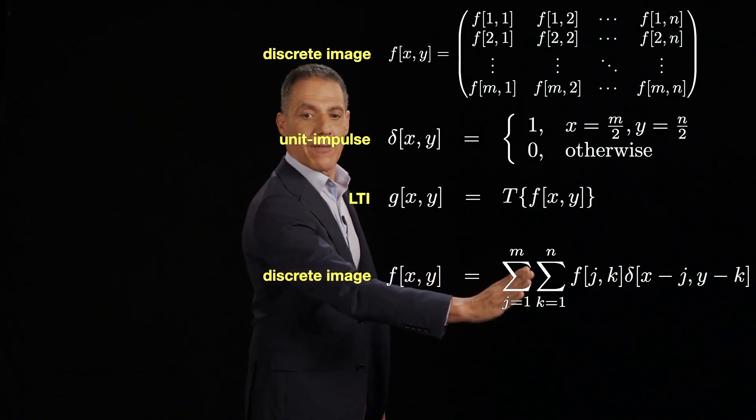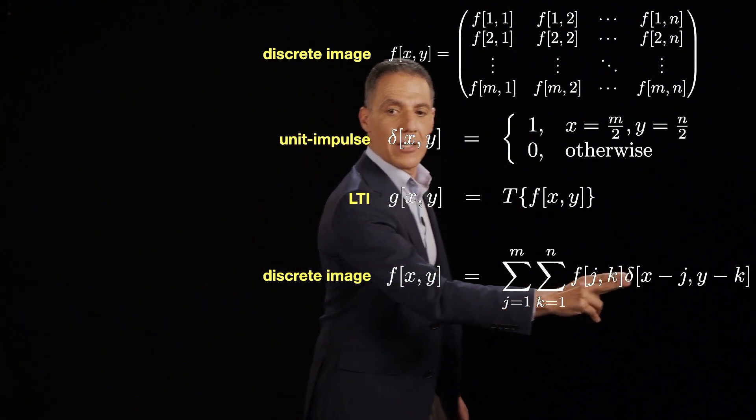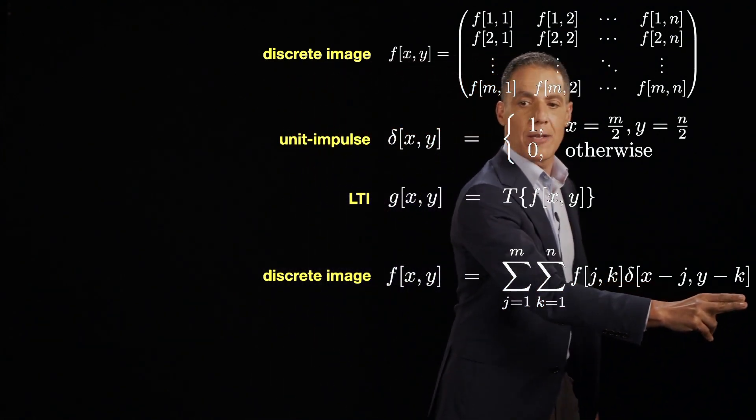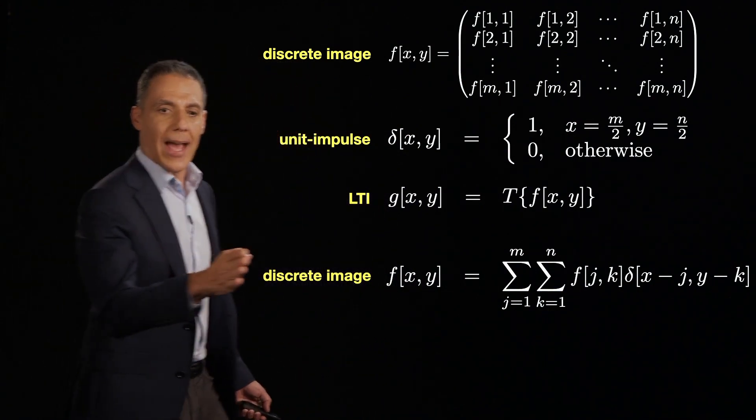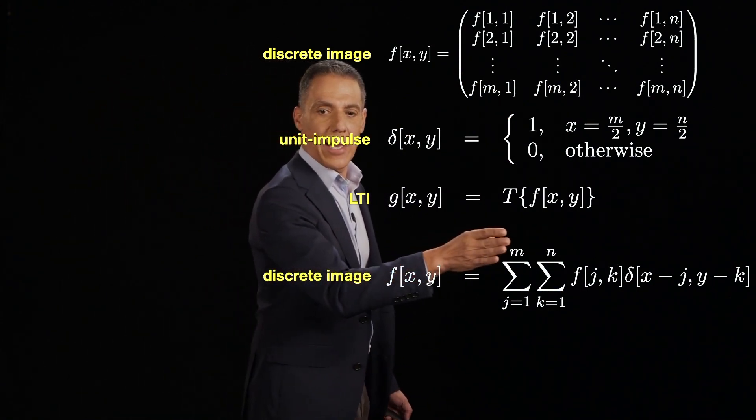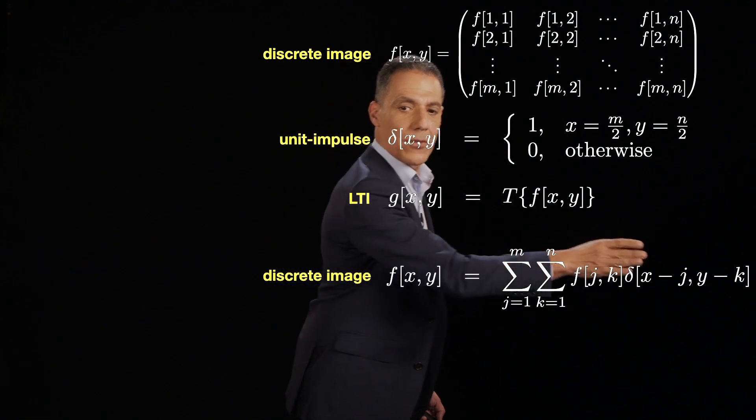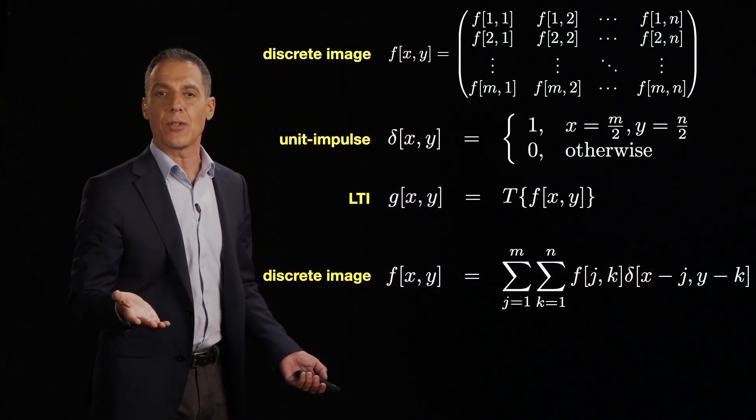Of scaled, f[j,k] - there it is right there - delta shifted by j and by k. And this should look really familiar. If I just knock out that y, I knock out the k and I knock out the y and the k here, I'm back to a 1D convolution.